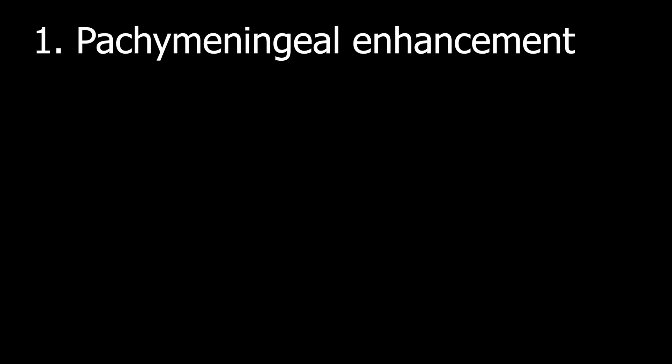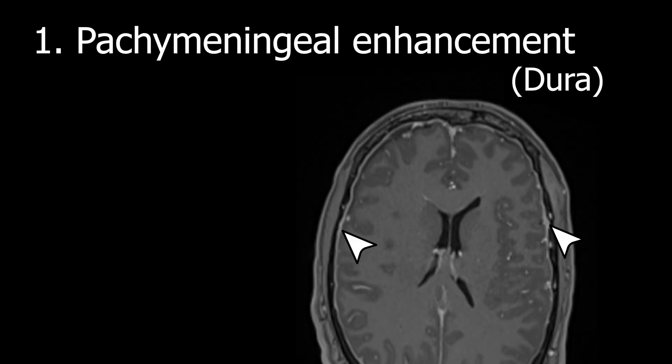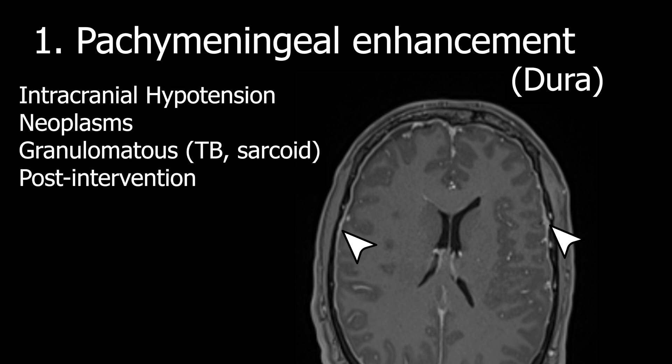Abnormal parenchymal enhancement can be caused by various conditions, and a key concept is characterizing the patterns of abnormal enhancement and associated differentials. Starting from the outside and working inwards: first and most peripheral, there are two types of abnormal meningeal enhancement. Number one is pachymeningeal enhancement, referring to enhancement of the dura — the outer layer of the meninges closely applied to the inner skull. Causes include intracranial hypotension with dural edema, neoplasms like meningiomas with dural tails, granulomatous diseases like TB and sarcoid with thick basal dural enhancement, and post-intervention.